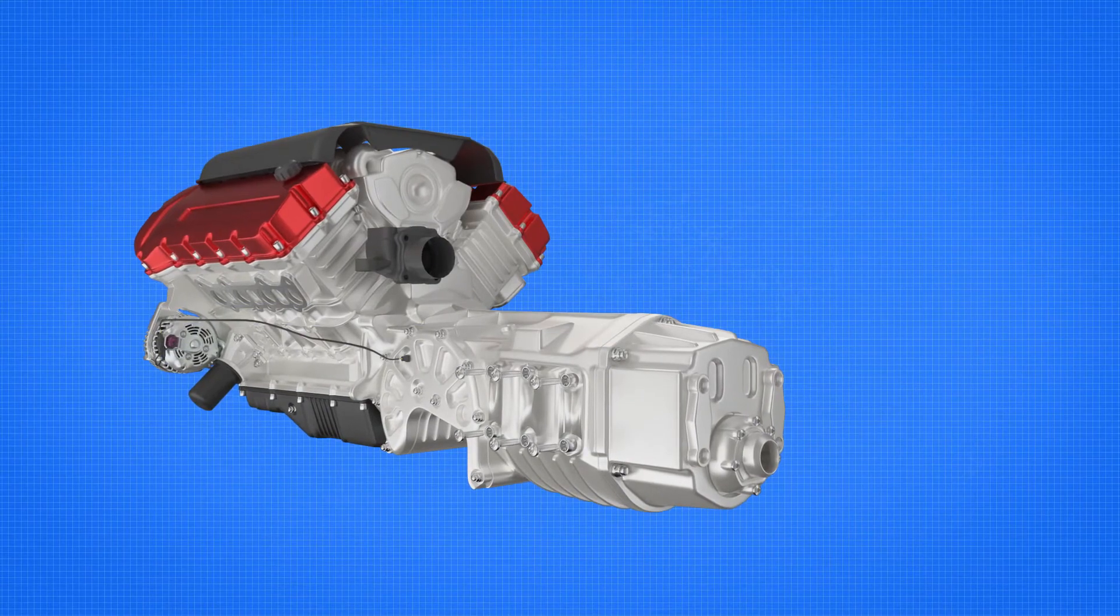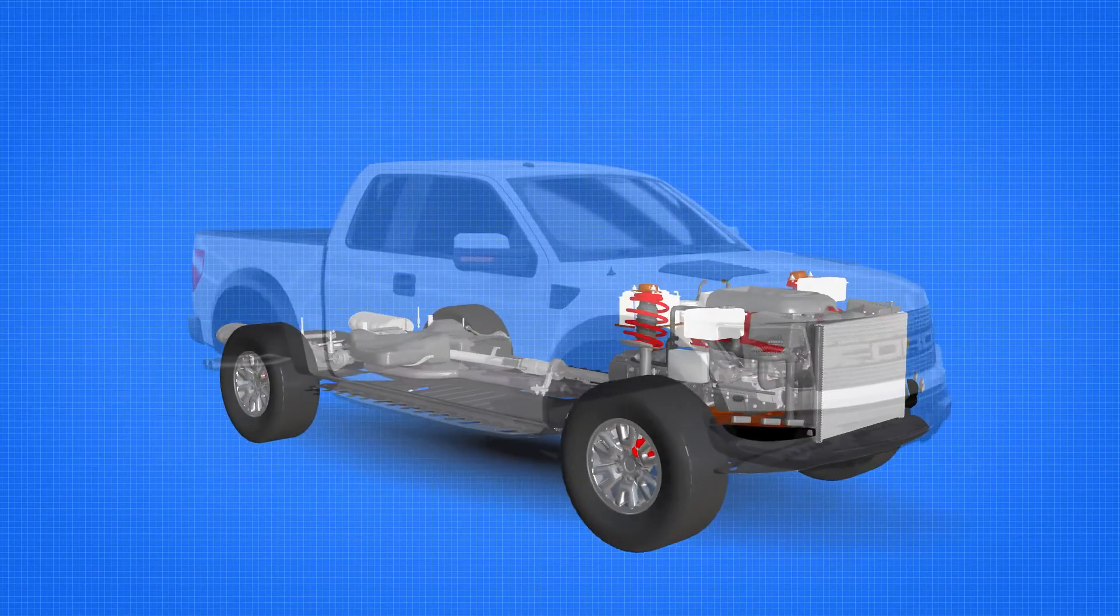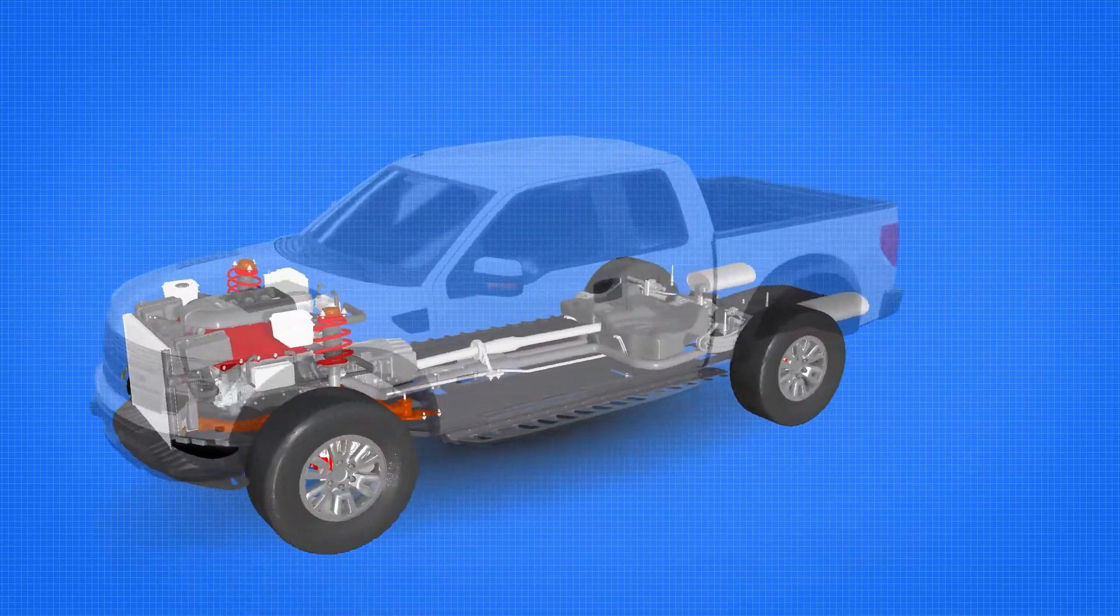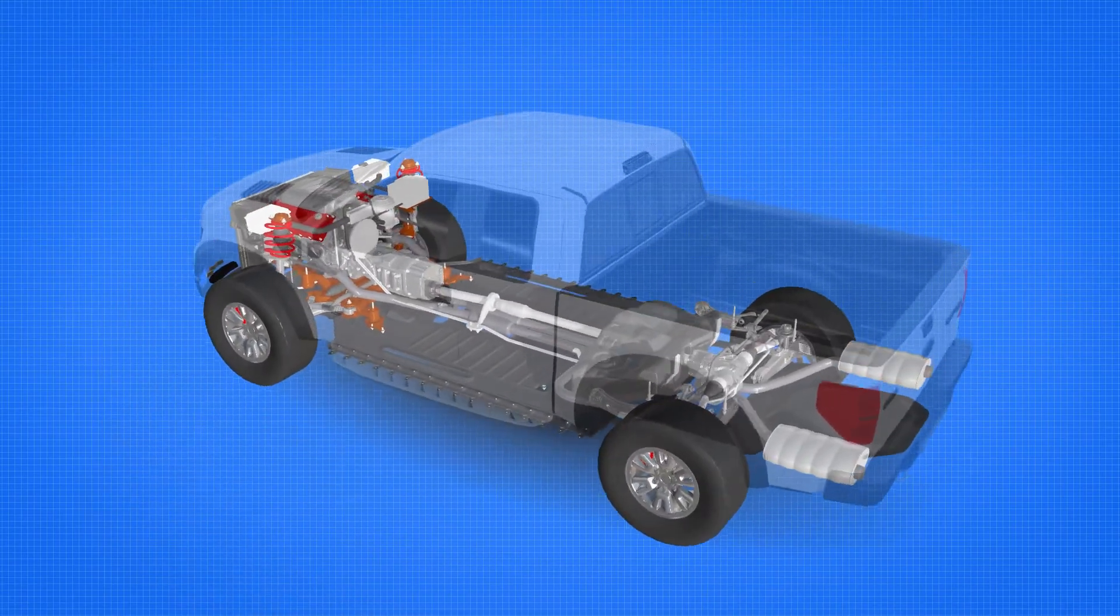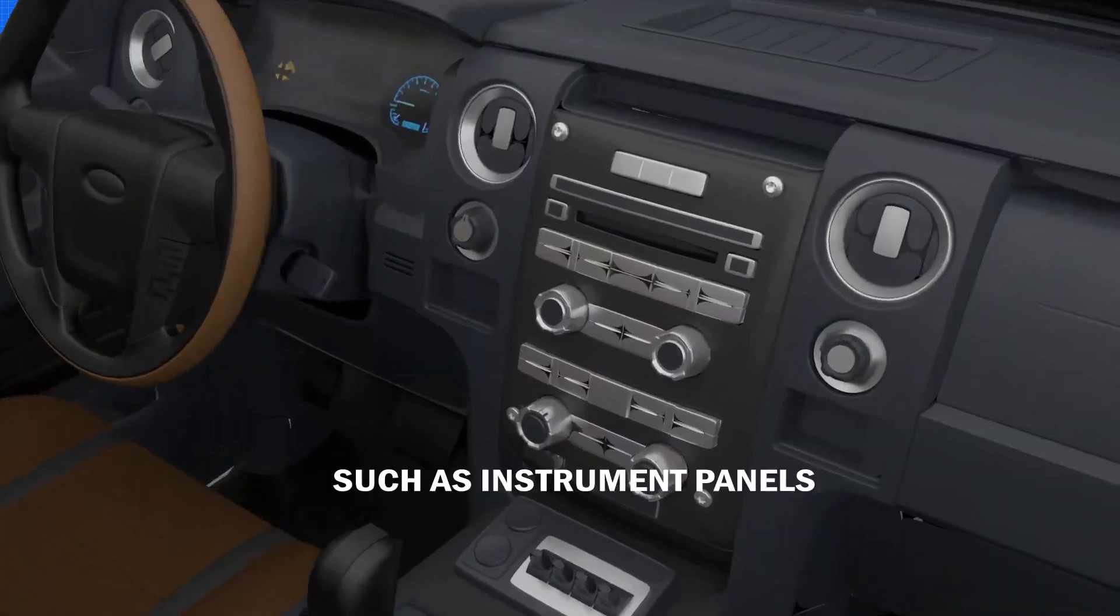Taptide screws have been used to assemble the aluminum die-cast housings of power transfer units. The interior of cars and trucks provide several opportunities where Taptide screws are used to attach seat belts, to assemble seats, and other interior components such as instrument panels.